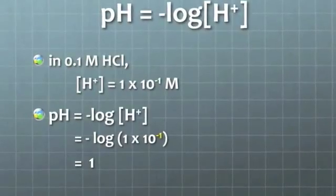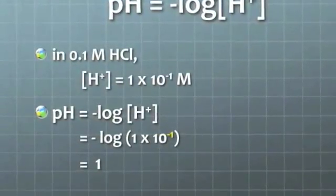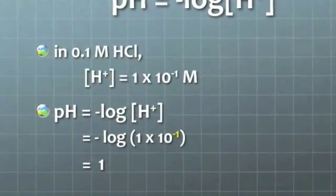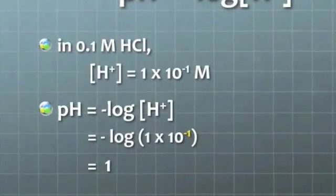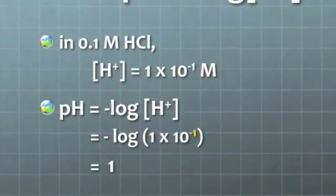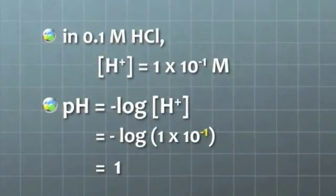Acids, on the other hand, have a much higher concentration of H-plus. For example, 0.1 molar HCl solution has 1 times 10 to the minus 1 moles of H-plus for every liter, and so the pH of that, taking the negative logarithm of 1 times 10 to the minus 1, is 1.